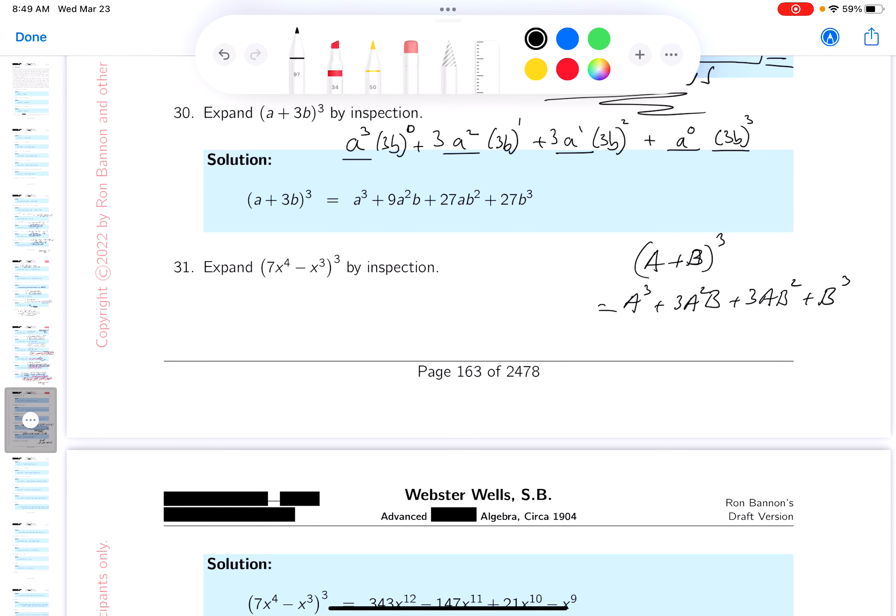Now someone says, could you simplify that? Of course I can. What would you get? You would get a³ plus 9a²B plus 27aB² plus 27B³.